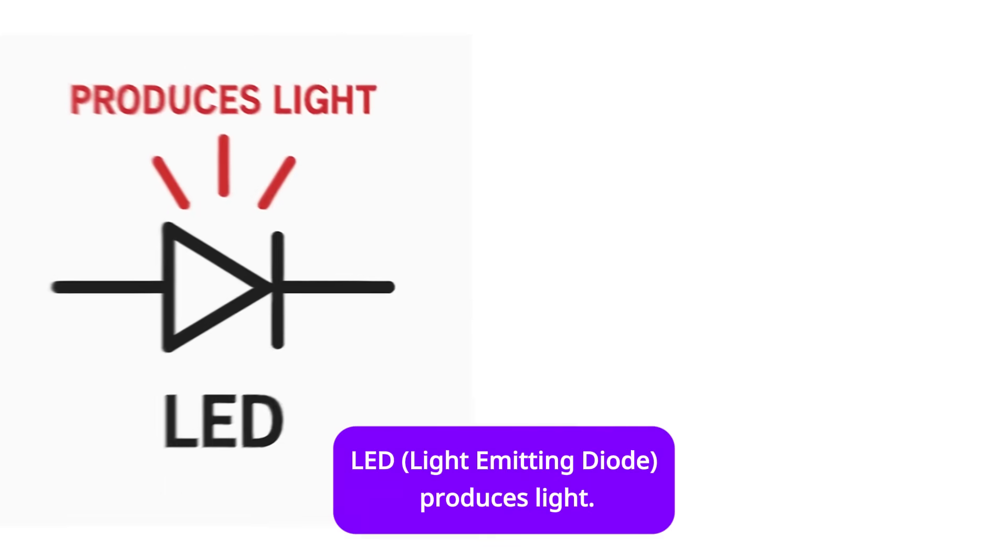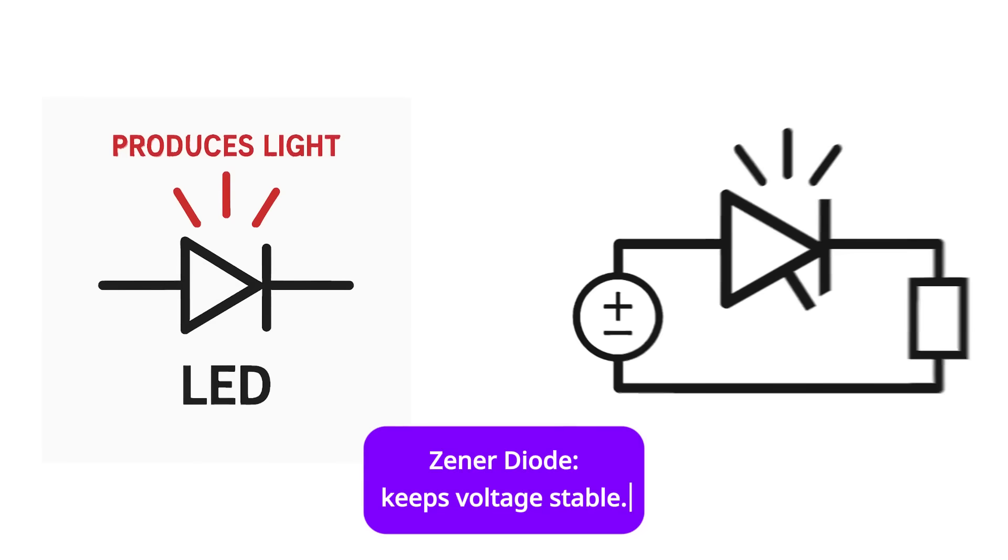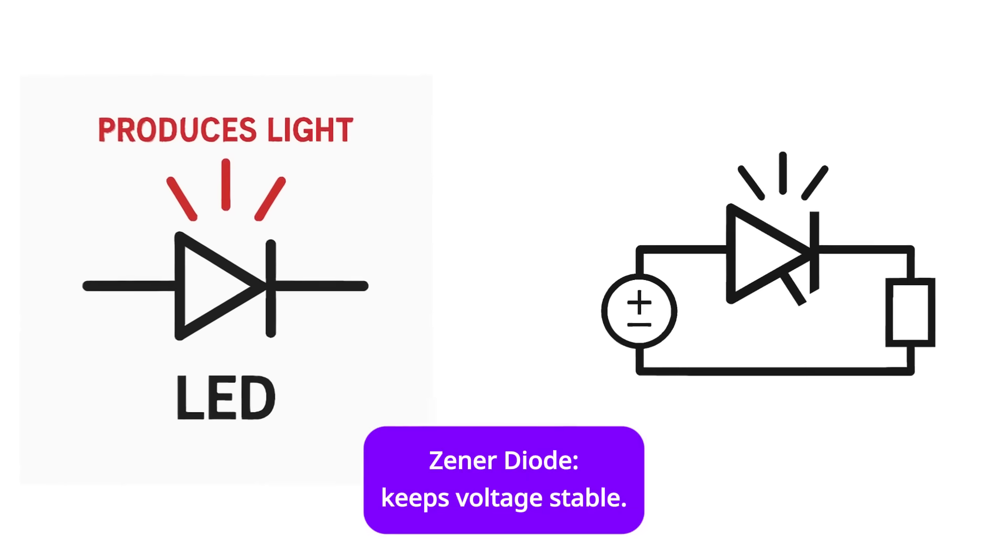Famous types: LED, light emitting diode, produces light. Zener diode keeps voltage stable.